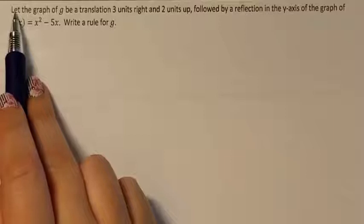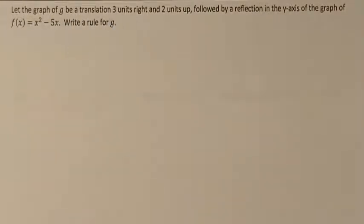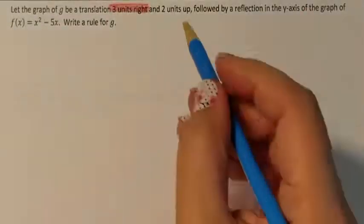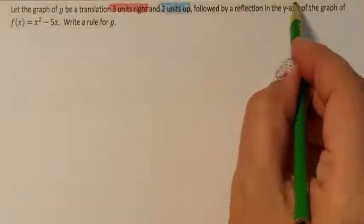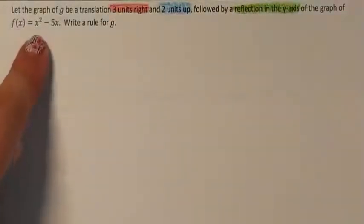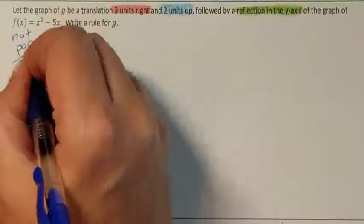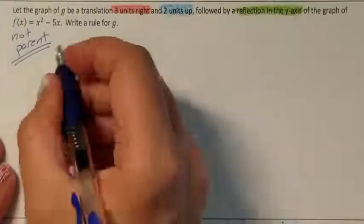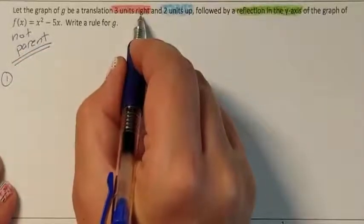Next problem: let the graph of g be a translation three to the right, then two up, then a reflection across the y-axis, and they give us an f that is not the parent. Because it's not the parent, we must use the Chapter 1 method. Step 1: go to the right three, which is an inside subtract 3 move.